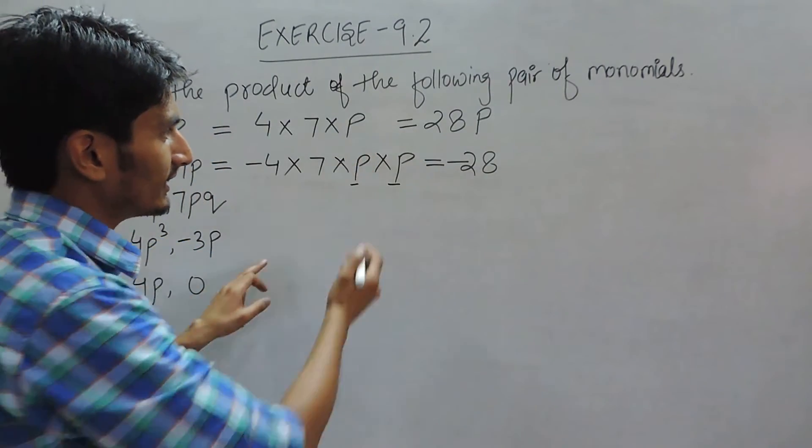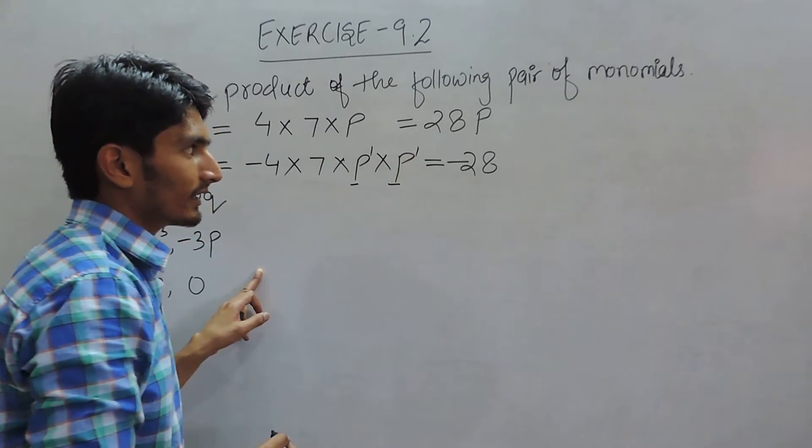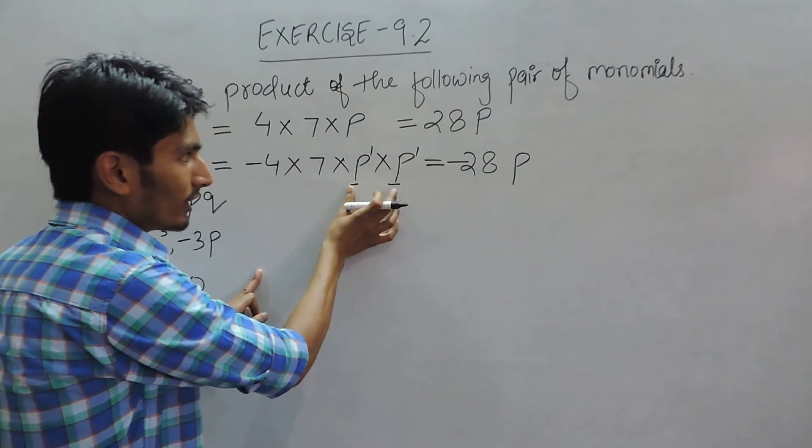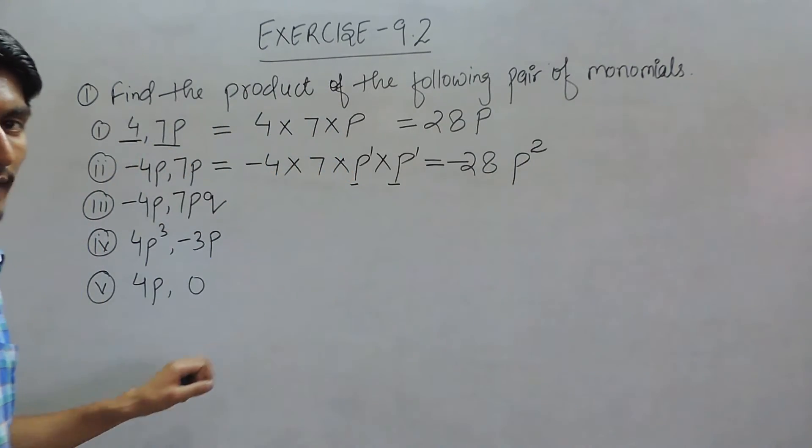Here if nothing is written, it can be considered as 1, and here also it can be considered as 1. So because they are multiplying, their power should be added. So this will be P².